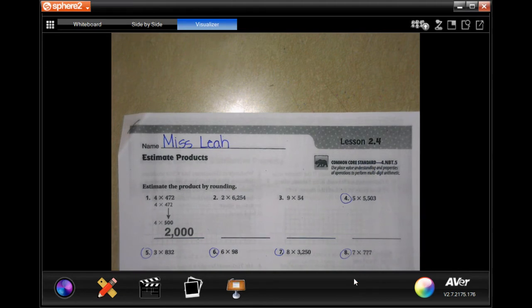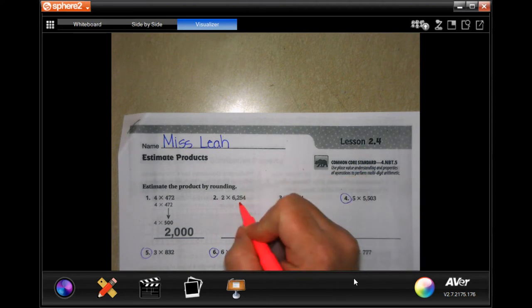We're going to go ahead and get started with number two. To estimate the product by rounding, I'm just going to use that two to tell me if the six needs to go up or stay the same. It can stay the same.